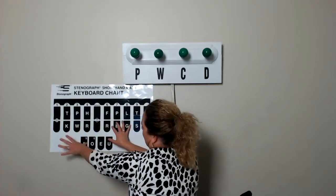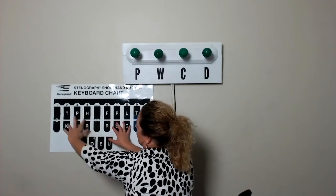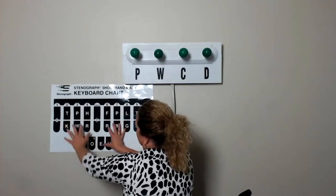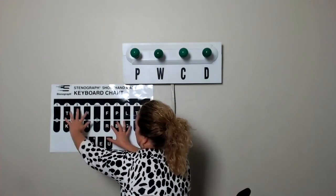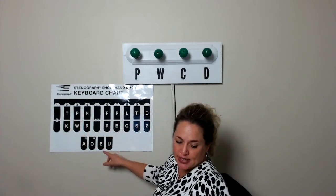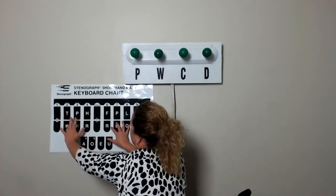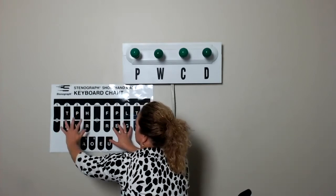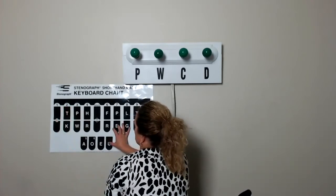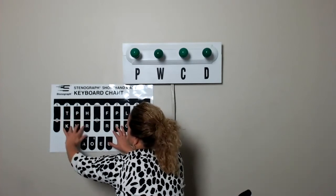Watch what I do: A, B — notice I'm hitting the letter and the RBGS at the same time — C, D, E, F, G, H, I — notice it's a long I, I'll explain why shortly — J, K, L, M, N, O, P, Q, R, S, T, U, V, W, X, Y, Z.